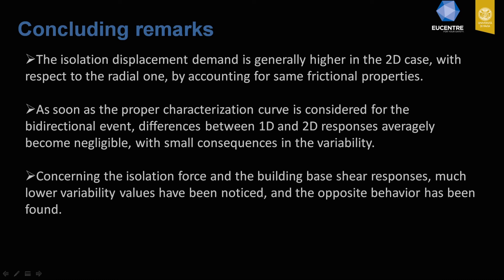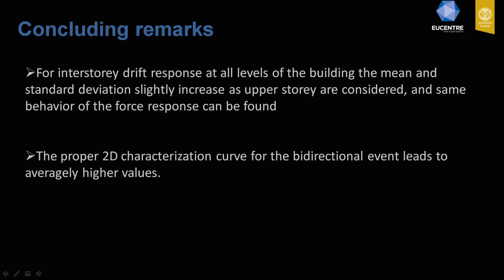In conclusion, the isolation displacement demand is generally higher in the bidirectional case with respect to the radial one when the same frictional properties are assumed. However, once the proper characterization curve is considered, the differences become averagely negligible, with small consequences in variability. For isolation force, base shear, and drift response, variability values of approximately 5 to 10% have been found, with opposite behavior: the bidirectional curve provides the highest force and drift. Mean and standard deviations increase for upper stories, and the proper bidirectional characterization curve leads to averagely higher values.